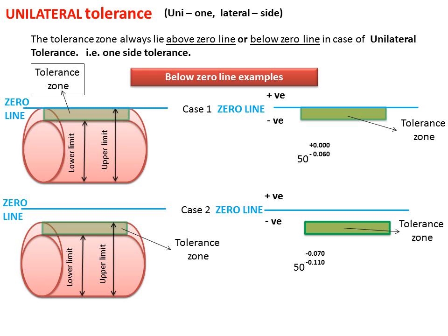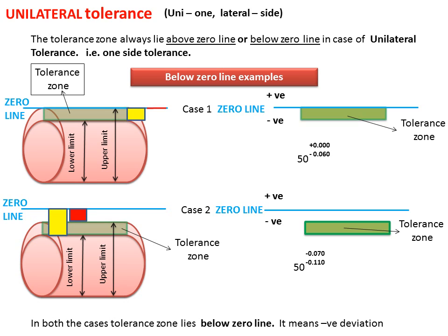In Case 1, for basic size 50, upper deviation is 0.00 and lower deviation is minus 0.060. The yellow area shows lower deviation and the red line shows upper deviation. Since upper deviation is 0.00, the red line matches the zero line. In Case 2, for basic size 50, upper deviation is minus 0.070 and lower deviation is minus 0.110. Again, the yellow area shows lower deviation and red area shows upper deviation. In both cases, the Tolerance Zone lies below the zero line, meaning negative deviation only.